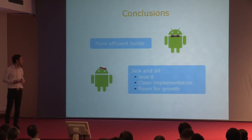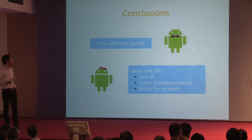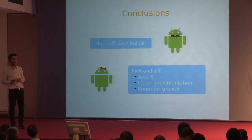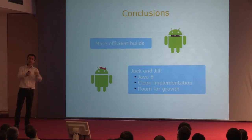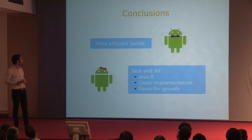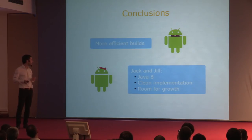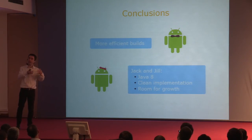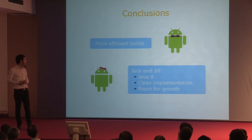That essentially concludes my talk. The conclusion is—I'm still a bit confused myself, so I hope I haven't confused you too much. Jack and Jill is moving ahead. The Java build process is moving ahead, and there are improvements on all sides. But definitely with Jack and Jill, you can look forward to Java 8 support. It has a clean implementation, and there is definitely room for growth on the front of performance and new features for Java 8 and beyond.